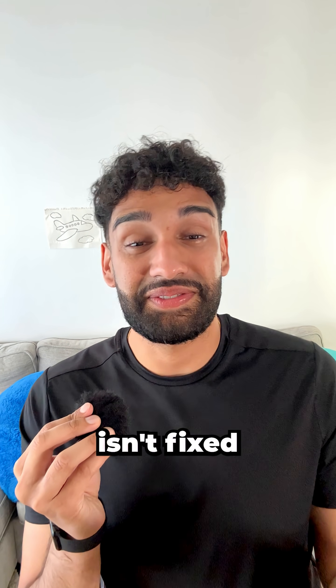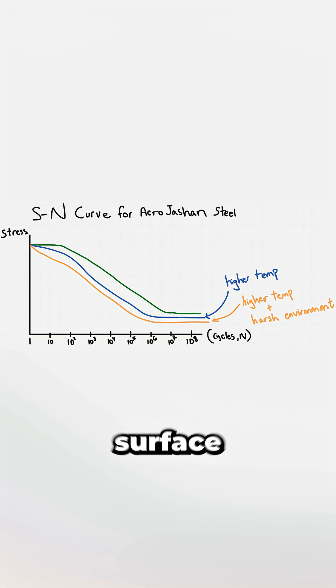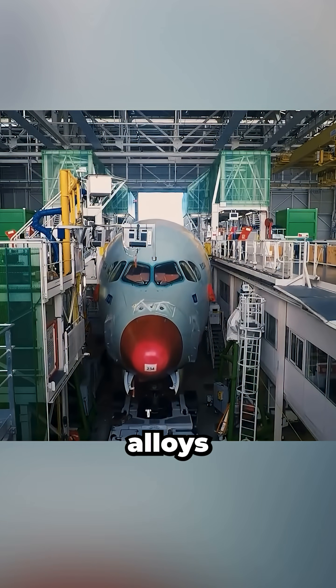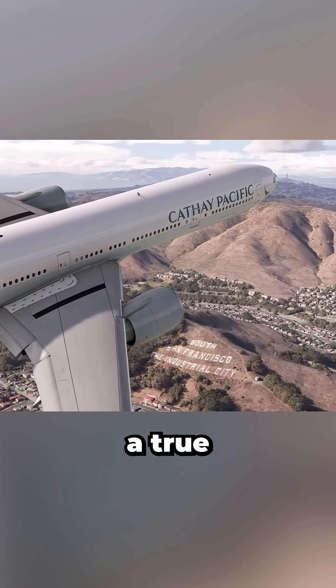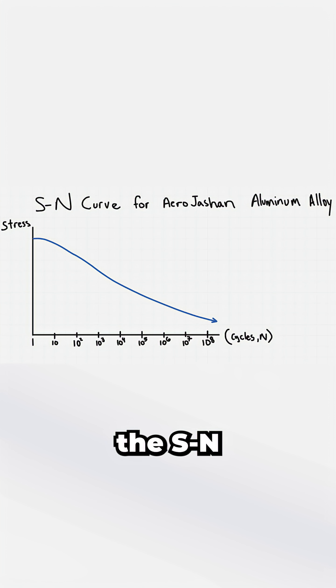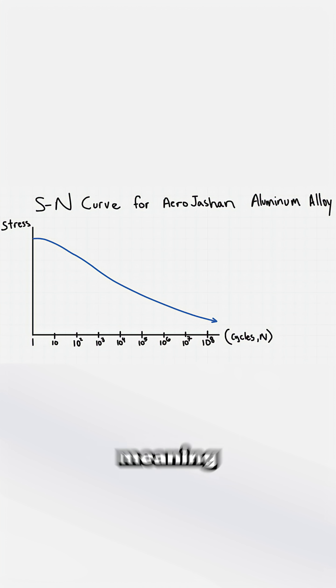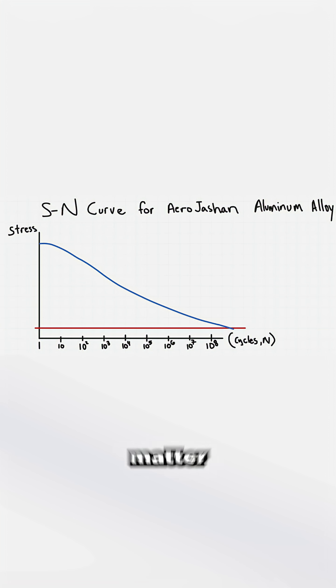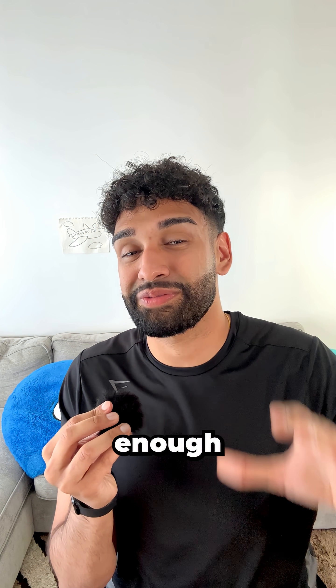But the endurance limit isn't fixed, and it isn't truly infinite. Surface finish, temperature, or environment are a few factors that can reduce it. And for materials like aluminum alloys, which are common in aircraft structures, a true endurance limit doesn't exist. The S-N curve keeps sloping downward, meaning fatigue failure can still occur no matter how low the stress, given enough time.